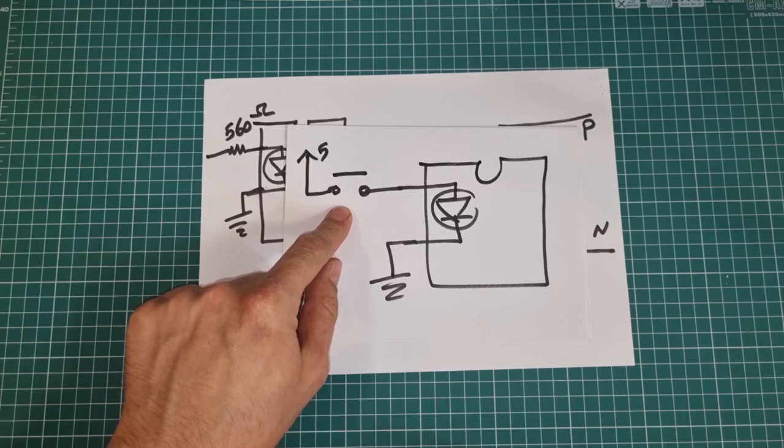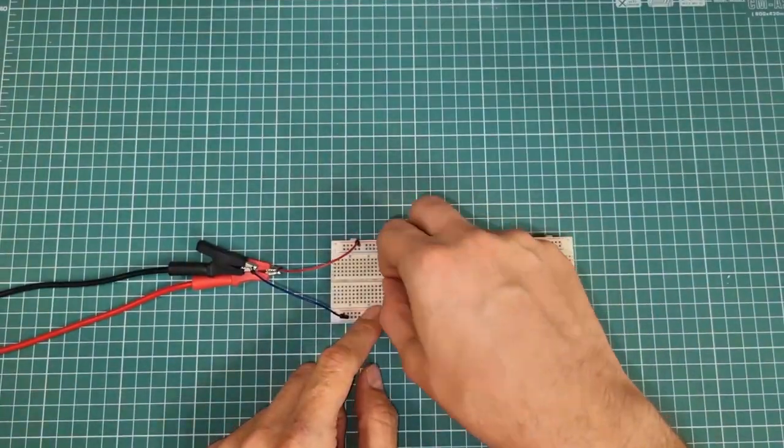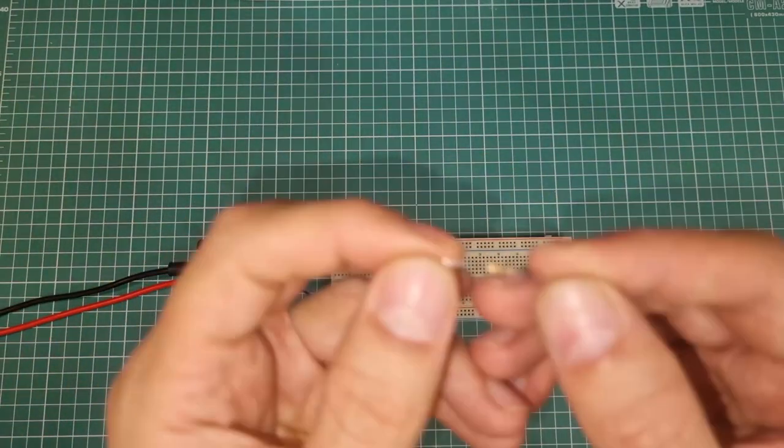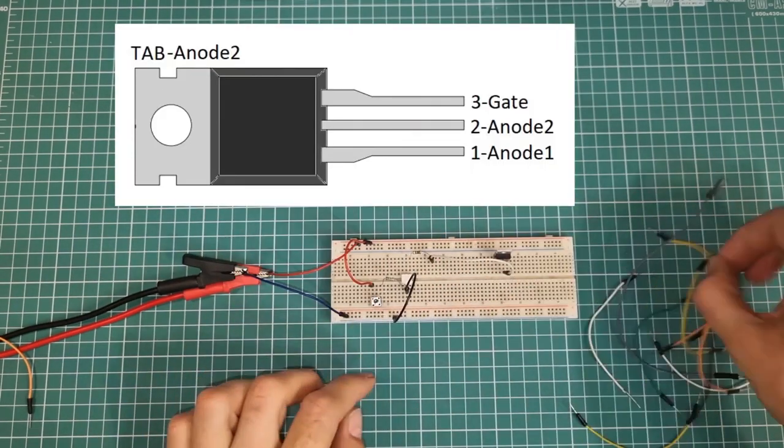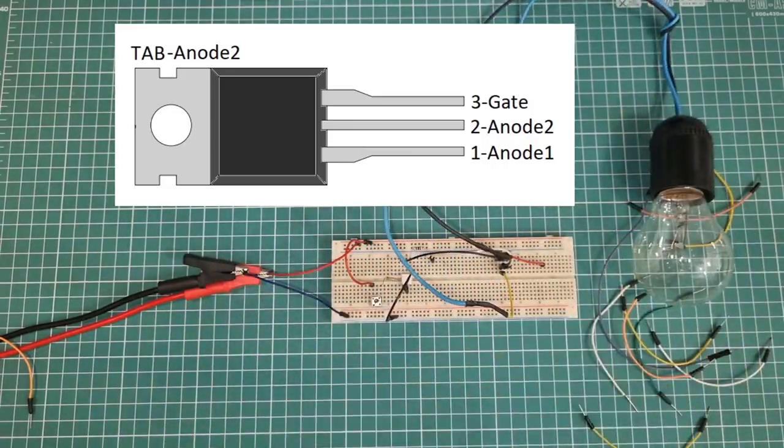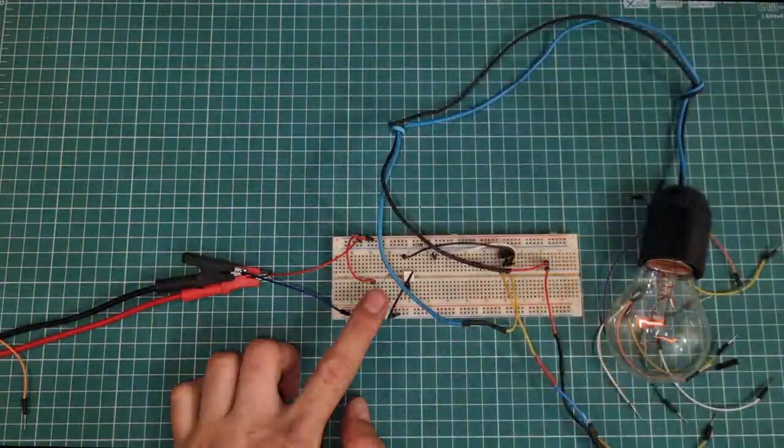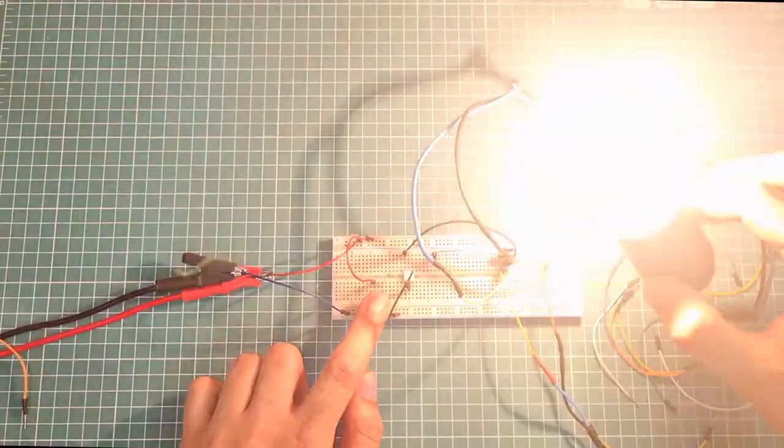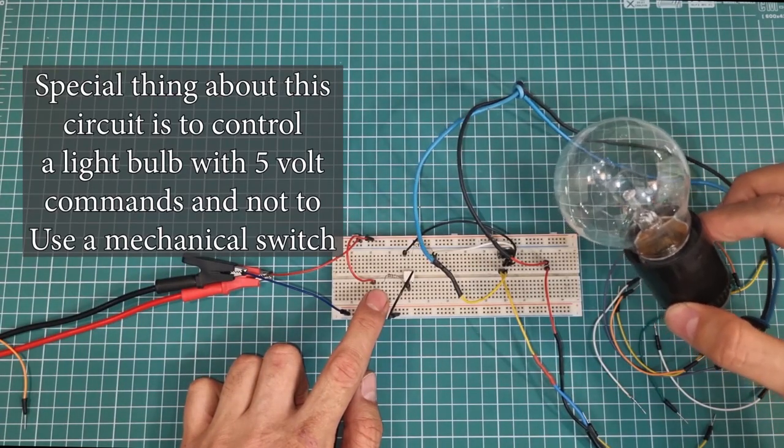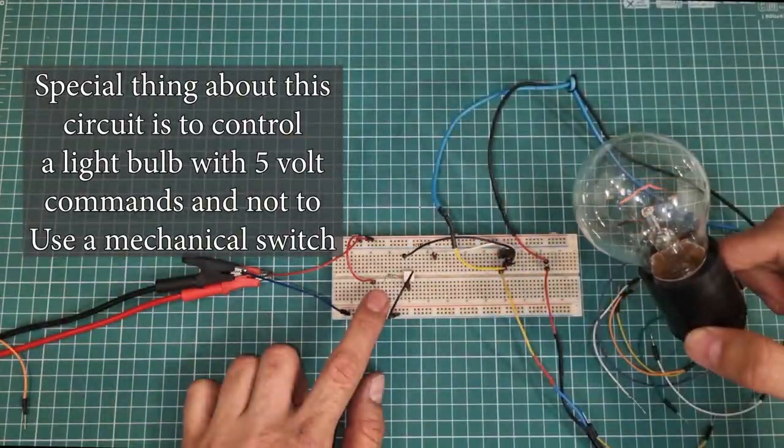Here is the tactile switch. When I press the tactile switch, the light bulb turns on, and when I release the switch, the bulb turns off. Here, we can control state of an AC light bulb with 5V commands.